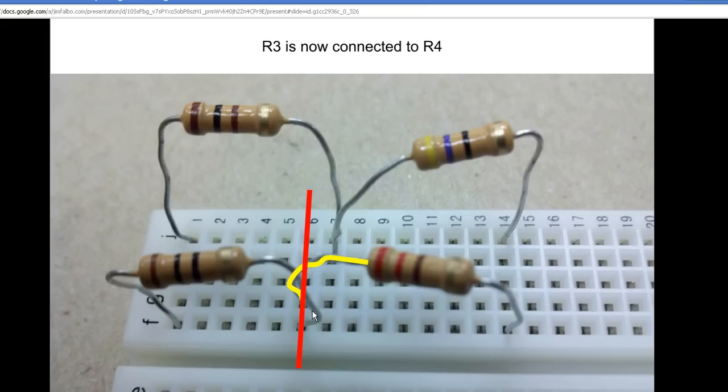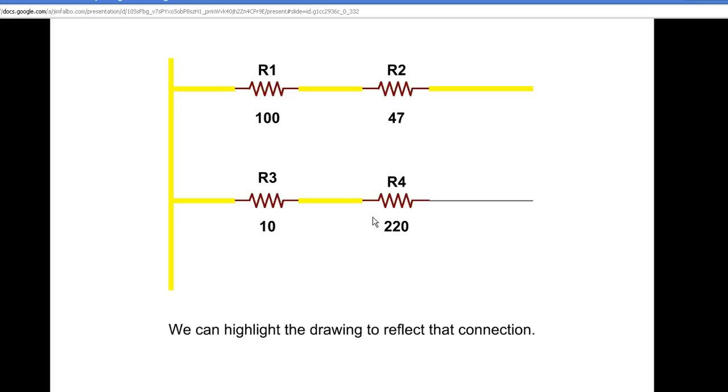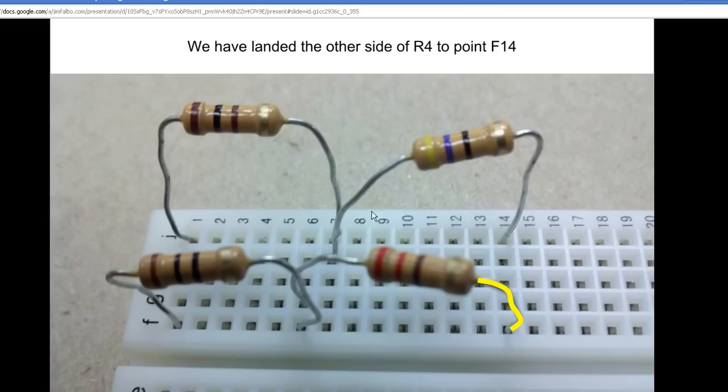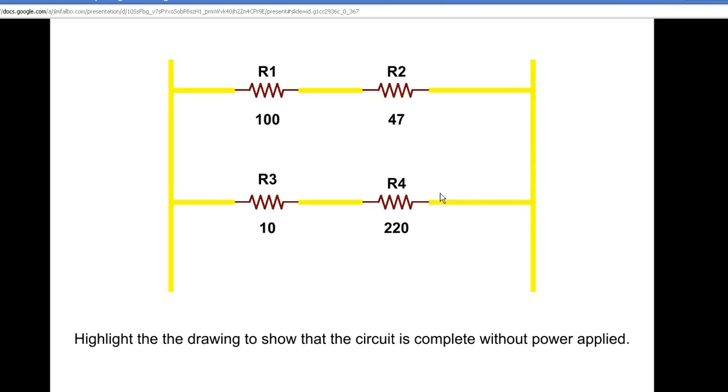Again, 6 is one row, so we have connected one leg of this resistor to one leg of R3. I can highlight that connection point. My last connection is the other leg of R4 to point F14.